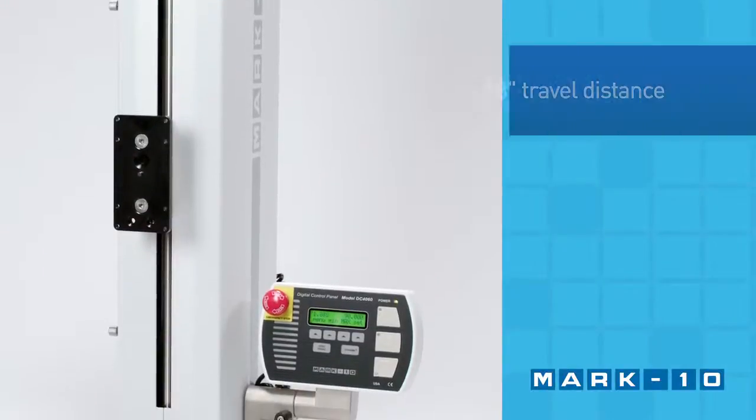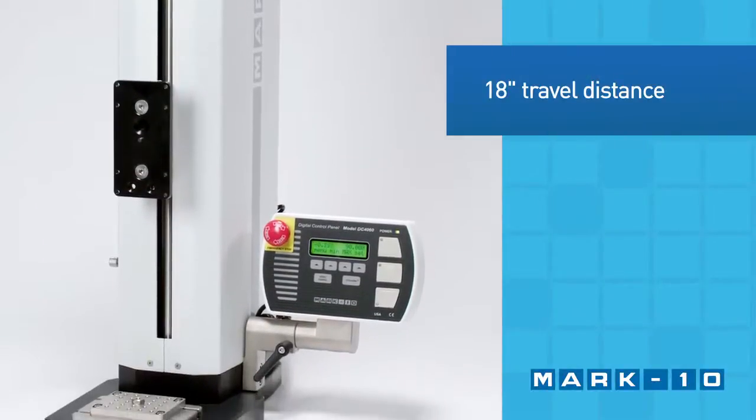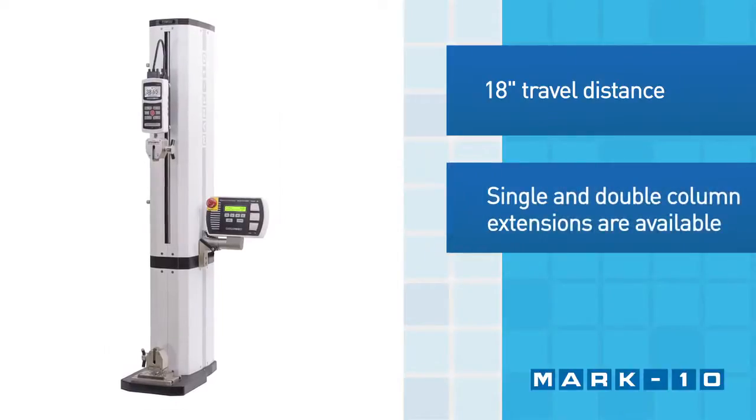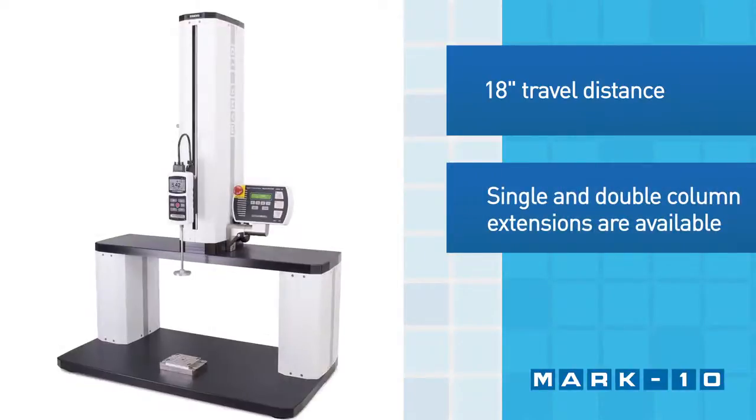The ESM 303 has a generous 18-inch travel distance. The clearance can be increased via single-column extensions or double-column extensions.